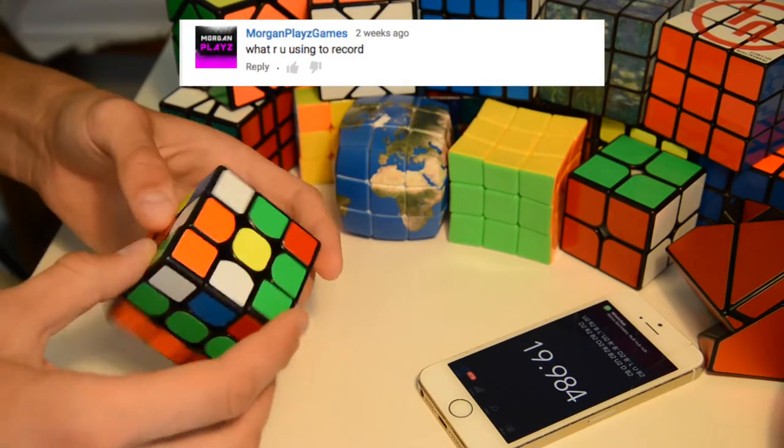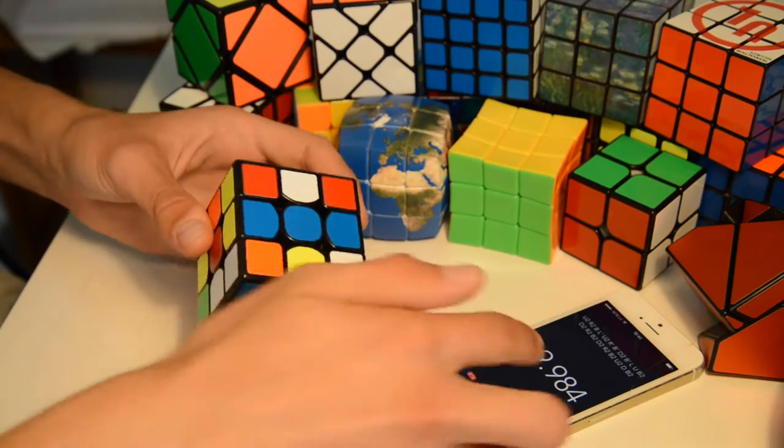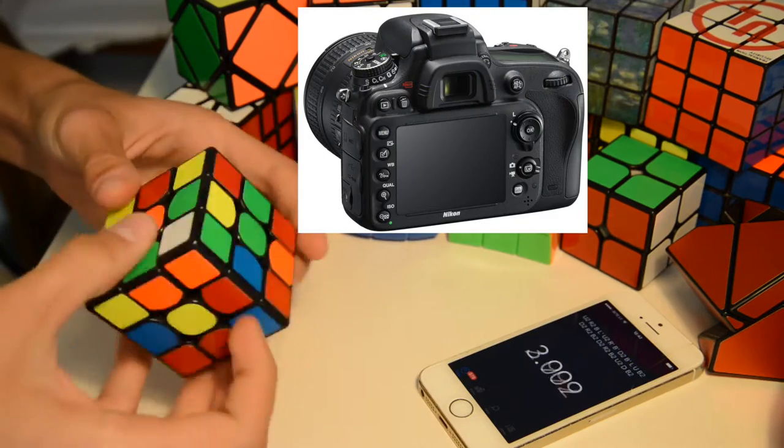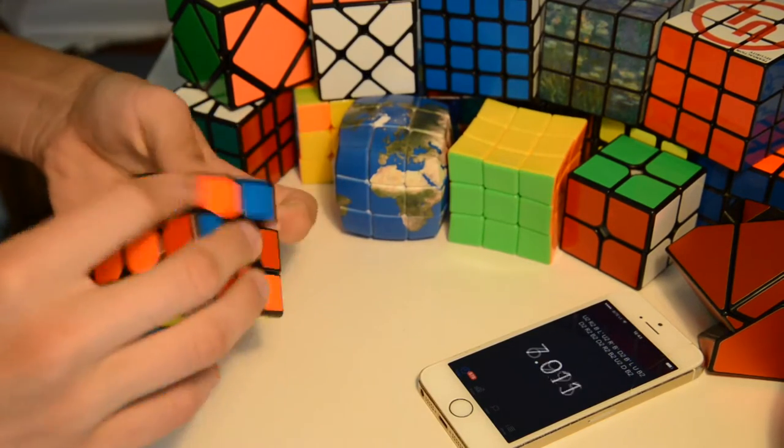The first question comes from Morgan plays games and she asks what are you using to record. I'm using the Canon D600 camera and it is a really good camera. You can get some pretty nice pictures and some really good quality videos out of it.